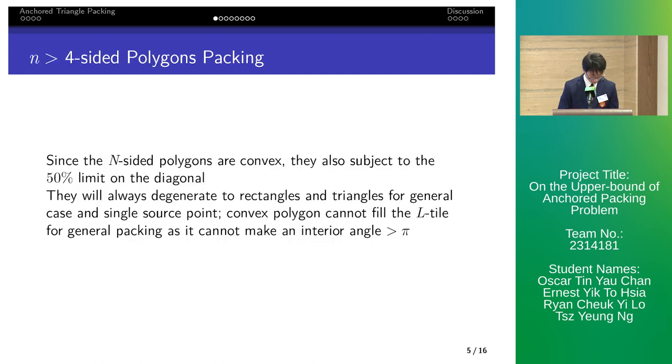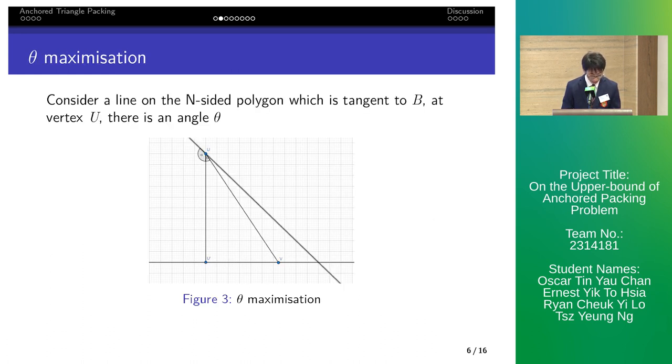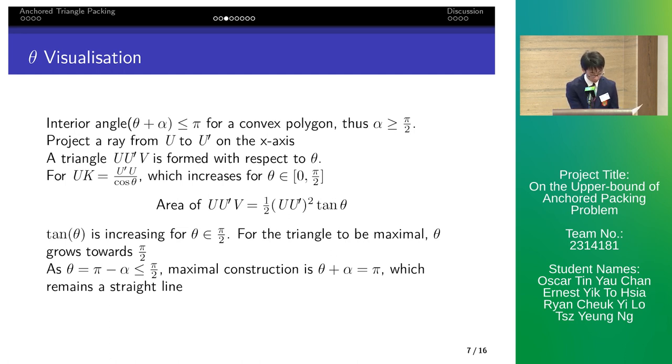Next we generalize to n larger than 4 sided polygons. Since n sided polygons are convex, they degenerate to rectangles and triangles for general case and single source point. Consider a line on the n sided polygon, which is tangent to b at vertex u. There is an angle theta. Theta plus alpha is the interior angle of the convex polygon, which is smaller or equal to pi. We project away from u to the x-axis. A triangle u u' 3 is formed. The area of the triangle is simplified to u u' squared tangent theta over 2. For the triangle to be maximal, theta goes towards pi over 2. By theta is less than pi minus alpha, the maximal construction shows theta plus alpha equals pi, which is a straight line.